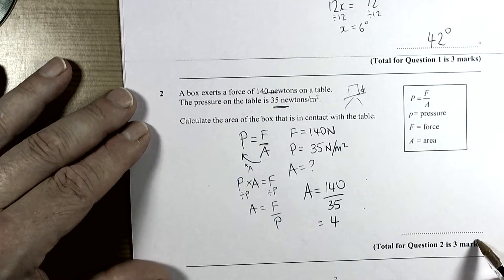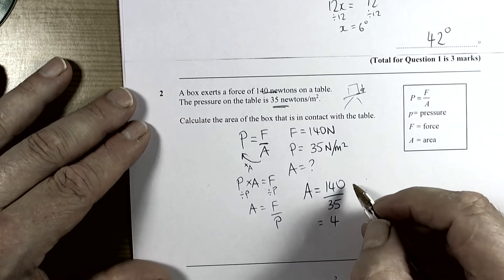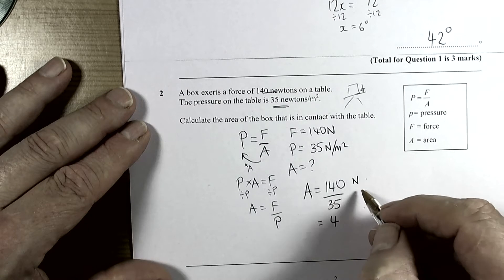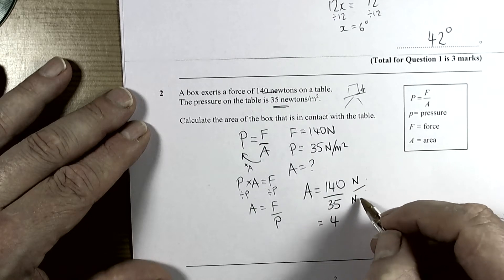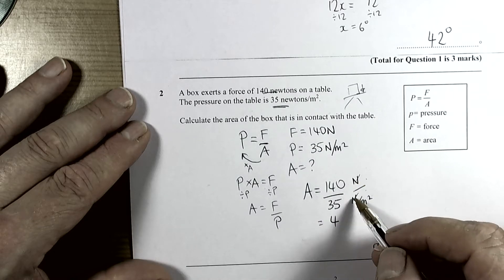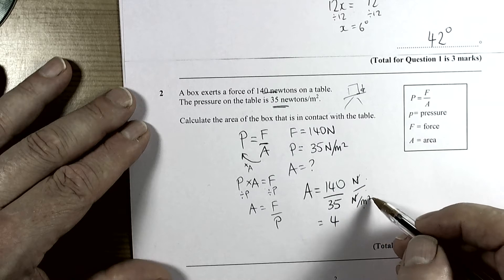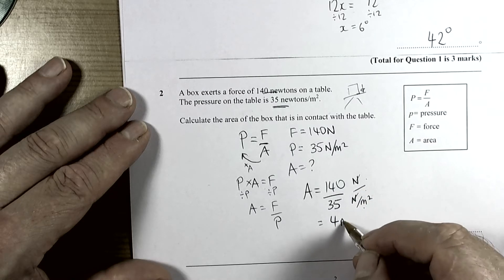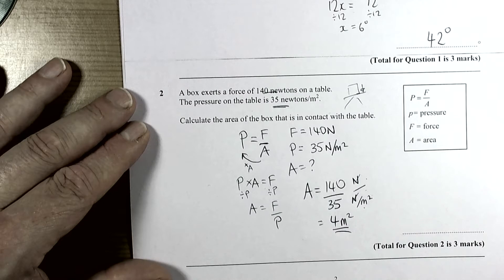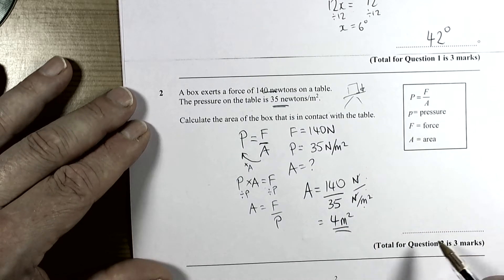Notice there's no units on this answer line, so the examiners are expecting you to provide the units. That's really important to watch for in your exams. We can see that we did 140 newtons divided by newtons per square meter. The newtons cancel each other out - newton divided by newton is one. Then we've got one over one over meter squared, which means the meter squared comes to the top. It's an area answer anyway, so we'd expect the area unit to be squared. It's four square meters.